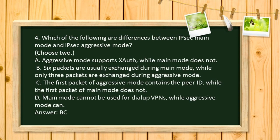Question 4. Which of the following are differences between IPSec Main Mode and IPSec Aggressive Mode? Choose 2. A. Aggressive Mode supports XAuth, while Main Mode does not. B. 6 packets are usually exchanged during Main Mode, while only 3 packets are exchanged during Aggressive Mode.